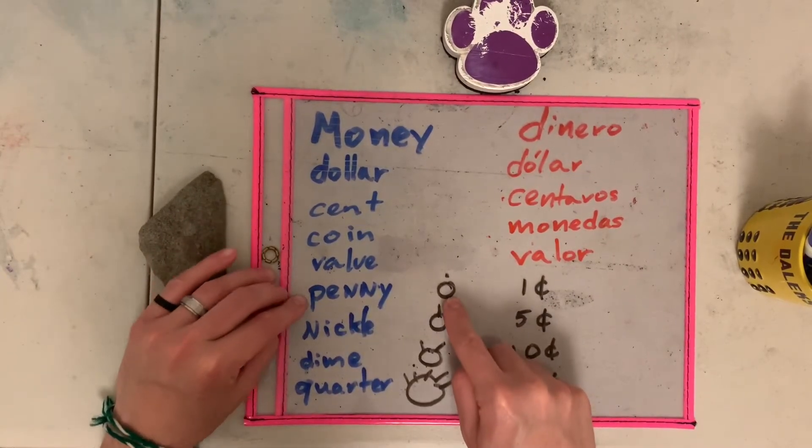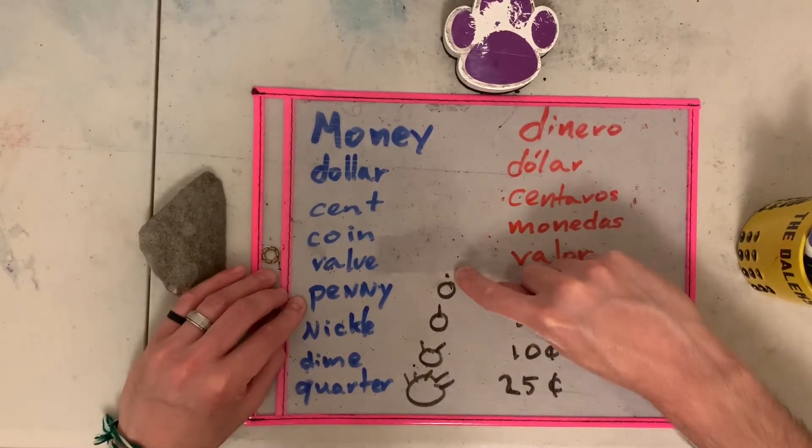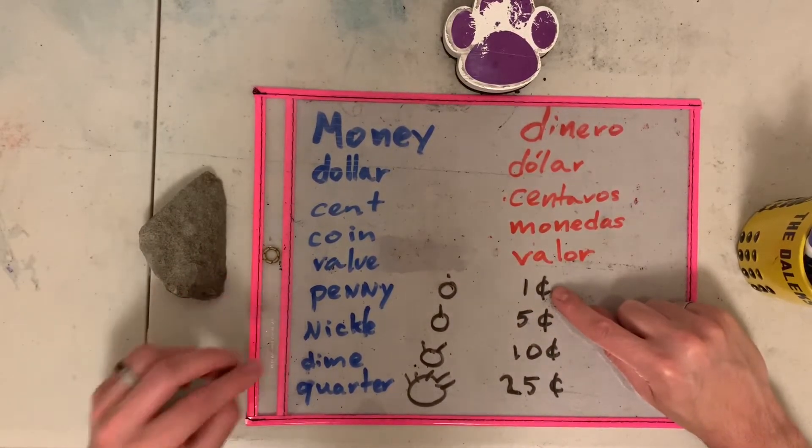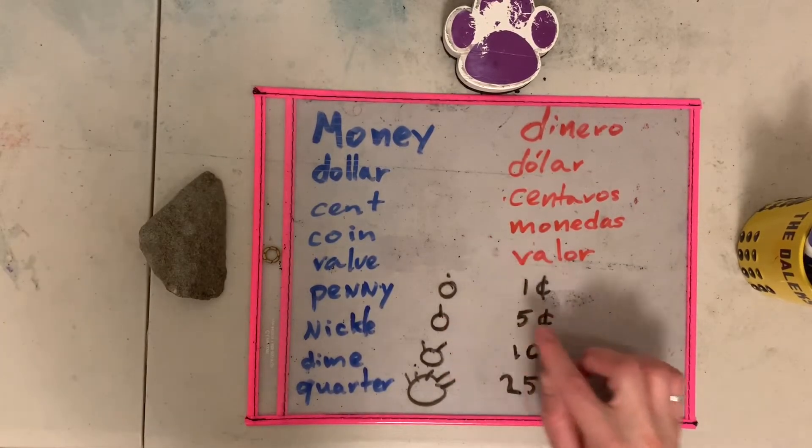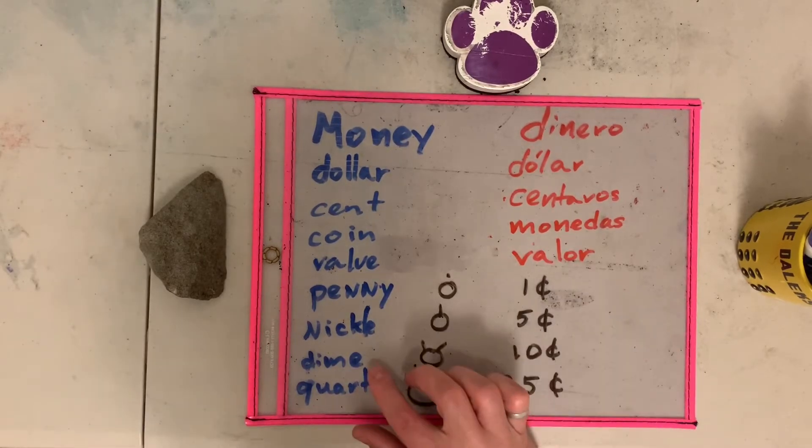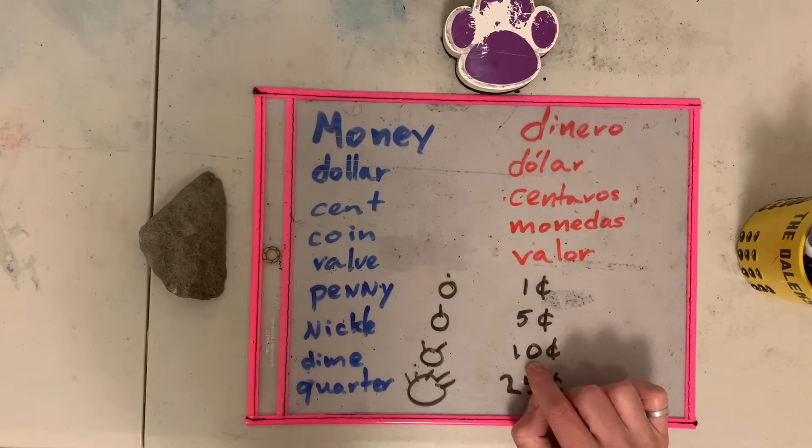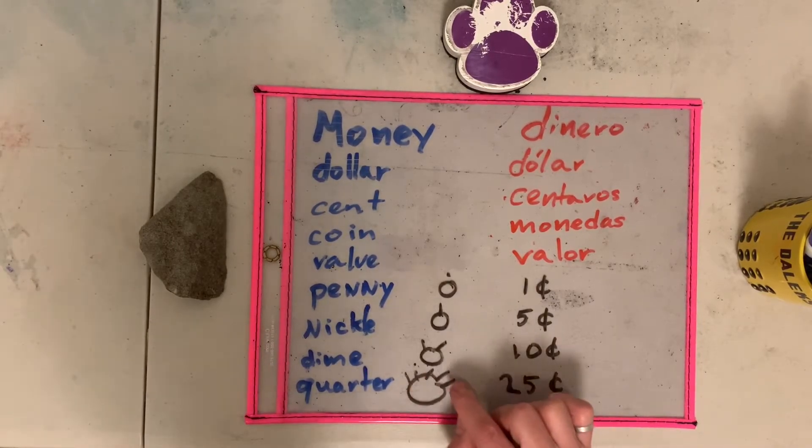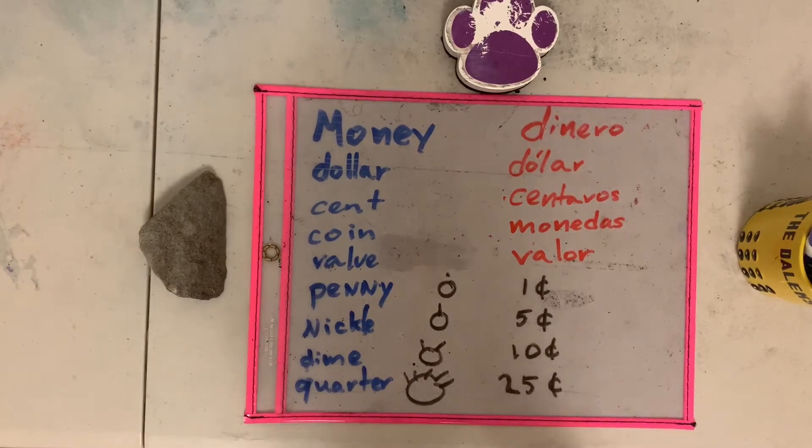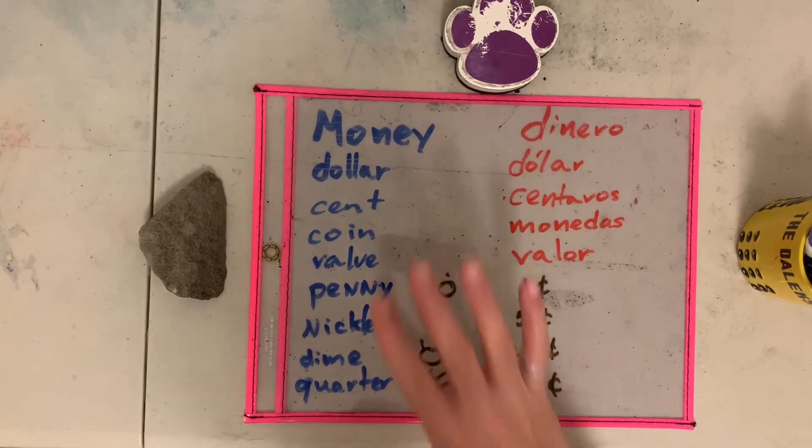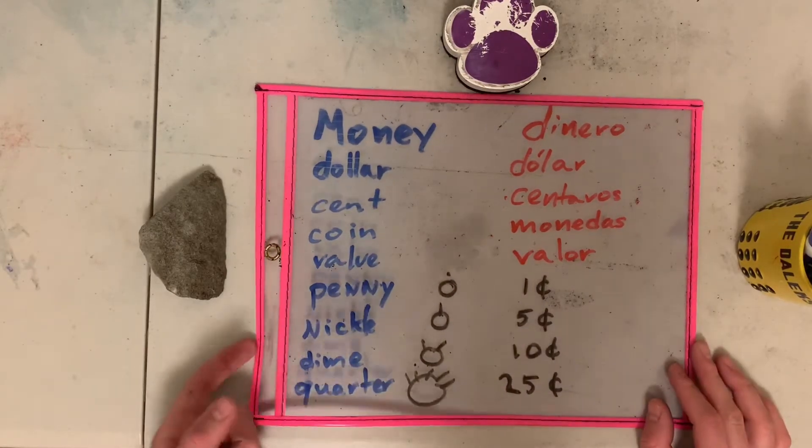Y tenemos aquí el penny. Cuando lo dibujamos, le hacemos un puntito arriba porque esto significa un centavos. One cent. Then we have the nickel. The nickel has one hair equals five cents. The dime has two hairs equals ten cents. And the quarter has one, two, three, four, five hairs. And it equals twenty-five cents. We need to remember that each hair equals five cents. Cada pelo que yo dibuje vale cinco centavos.